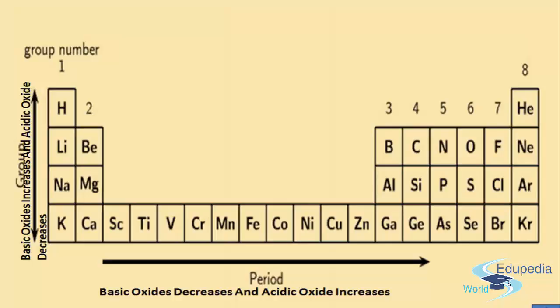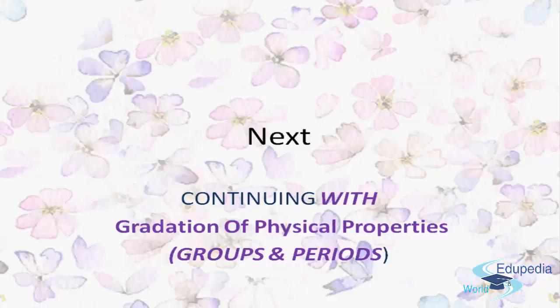I hope you have understood the whole discussion — what oxides are, how they are formed with metals and non-metals, and how they vary in groups and periods in the periodic table. In the continuing session we shall discuss the gradation of the physical properties of elements with respect to groups and periods. Thank you very much. Thanks for watching AutopediaWorld videos.